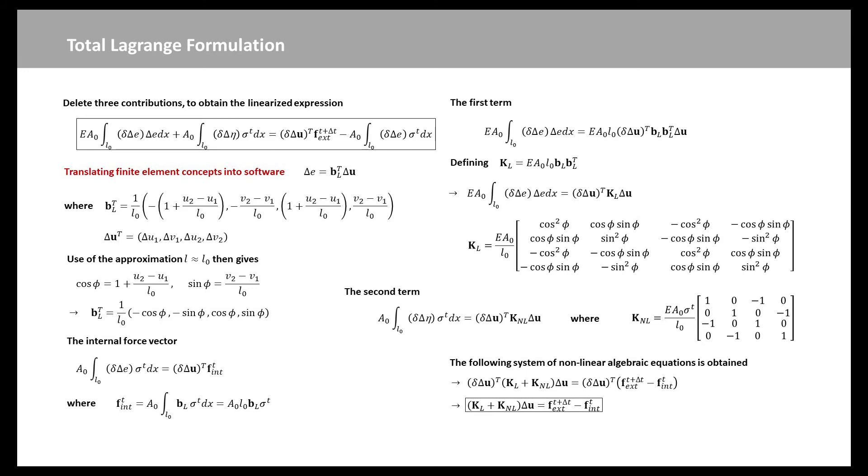The second term is geometric, or nonlinear, contribution to the tangential stiffness matrix, so that we have the second part of the tangential stiffness matrix KNL. This contribution is very important in geometrically nonlinear calculations, since it embodies the destabilizing influence in structural members that are subject to compressive forces. Since this equation must hold for any virtual displacement vector, the system of nonlinear algebraic equations is obtained.